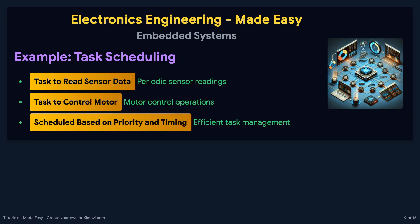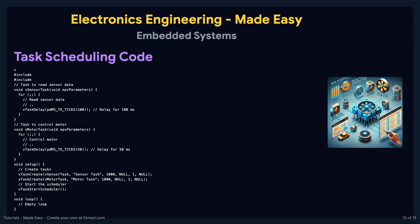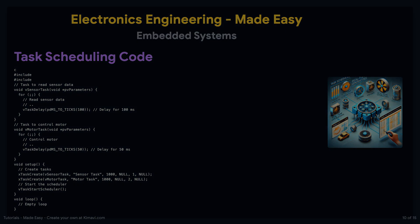Consider a system with two tasks: one to read sensor data and another to control a motor. An RTOS can schedule these tasks based on their priority and timing requirements. Here is the code for task scheduling using FreeRTOS, where the tasks are created and scheduled based on their priority and timing requirements.